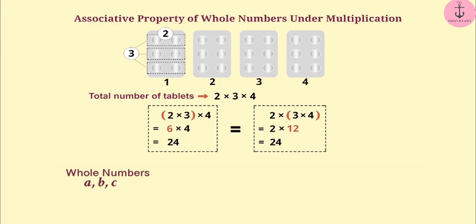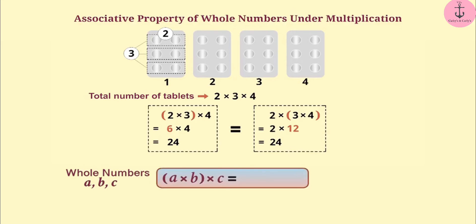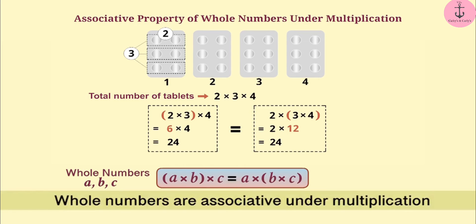In this way, any three whole numbers A, B and C can be multiplied by grouping in any order. The result of (A × B) × C is equal to A × (B × C). Therefore, whole numbers are associative under multiplication.